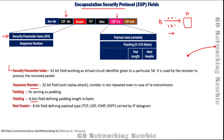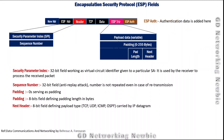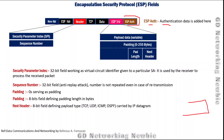The Next Header field in ESP again defines what kind of payload is in the packet — for example TCP, ICMP, or other protocols. Finally, the ESP Authentication Data is added separately at the end, similar to the Authentication Data in the AH case where the result of the hash function was included. That is the last field in the ESP structure.